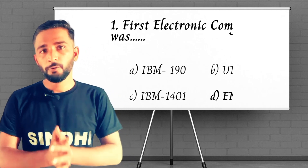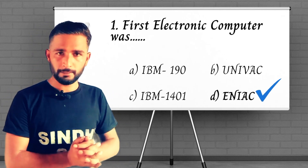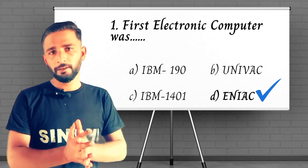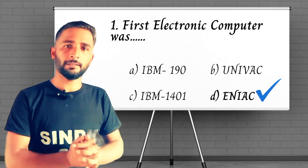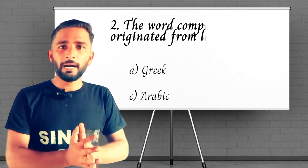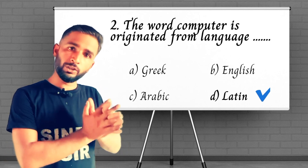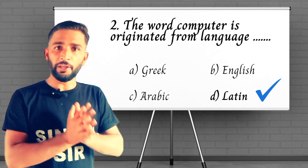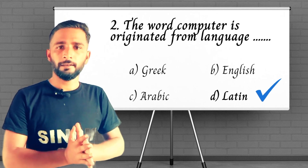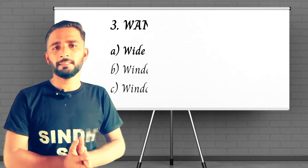Question number one: the first electronic computer — answer is option D. Question number two: the word 'computer' is originated from which language? Answer is option D, Latin.